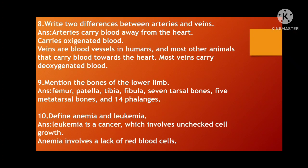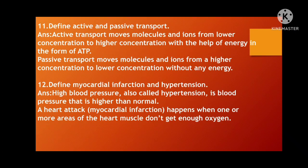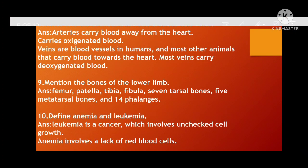Next: Mention the bones of the lower limb. The bones are: femur, patella, tibia, fibula, seven tarsal bones, five metatarsal bones, and 14 phalanges. These are the bones of the lower limb.